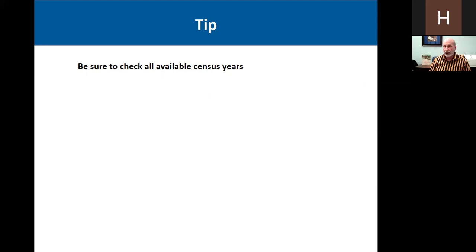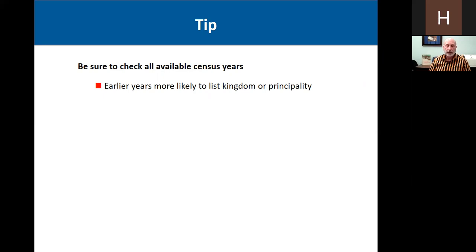Make sure that you check all available census years for your ancestor's information. Earlier years are more likely to list the specific kingdom or principality. In later years, the instructions to enumerators was just to list the country — not to be any more specific than that — so in later years you're just going to find Germany. Prussia is not specific after 1866, because after 1866 Prussia controlled a lot of territory in Germany, so if someone lists Prussia as their birthplace, it can mean a lot of different places.